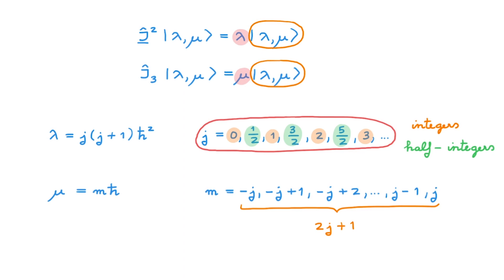In the companion video, I go into a lot of detail over the mathematical derivation as to why these are the only allowed eigenvalues of j squared and j3. Today's video is much lighter on the maths, and I instead focus on some important concepts relating to these eigenvalues.